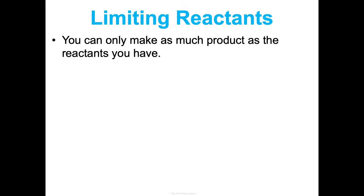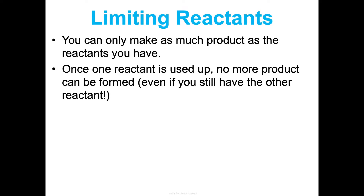Let's talk limiting reactants. You can only make as much product in a chemical reaction as the reactants that you have. Once one reactant is used up, no more product can be formed, even if you still have the other reactant. Think about walking into my pantry — I've got a jar of peanut butter, a brand new jar of jelly, but I only have four pieces of sandwich bread. So I can only make two full PB&J sandwiches. The bread is what is limiting me. That's all we're talking about in chemistry.